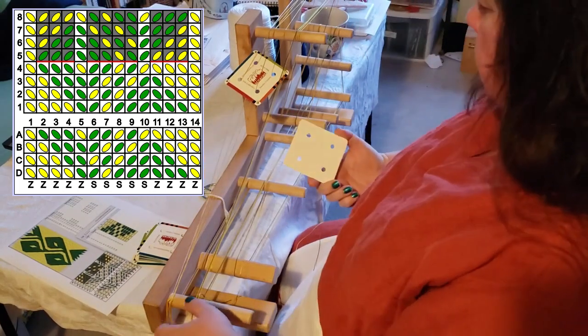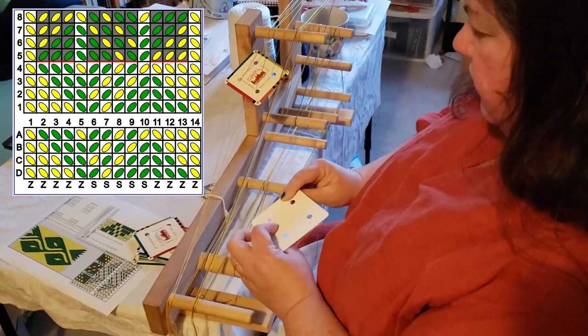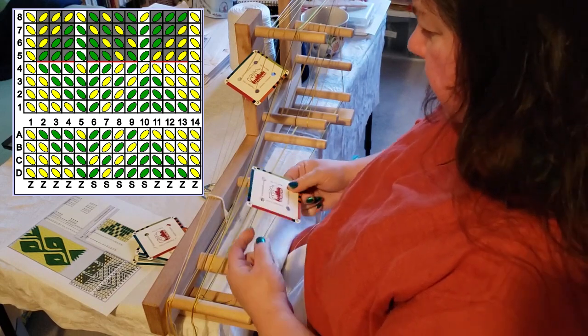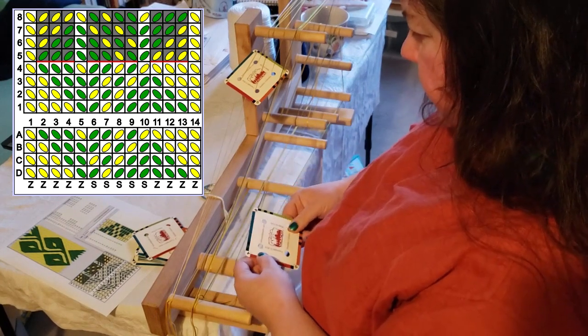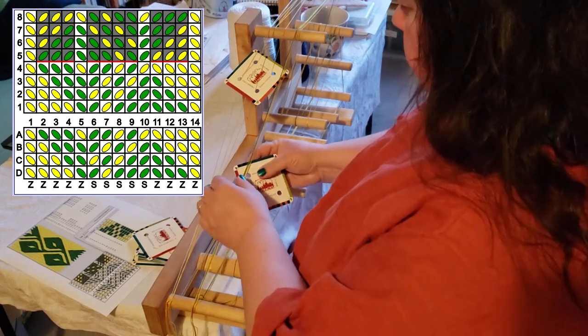Okay, card number two. These cards aren't even numbered. I love these cards. I love the colored sides on them. It just works really well for my brain. Okay, also Z-threaded. A is green and the rest are yellow.